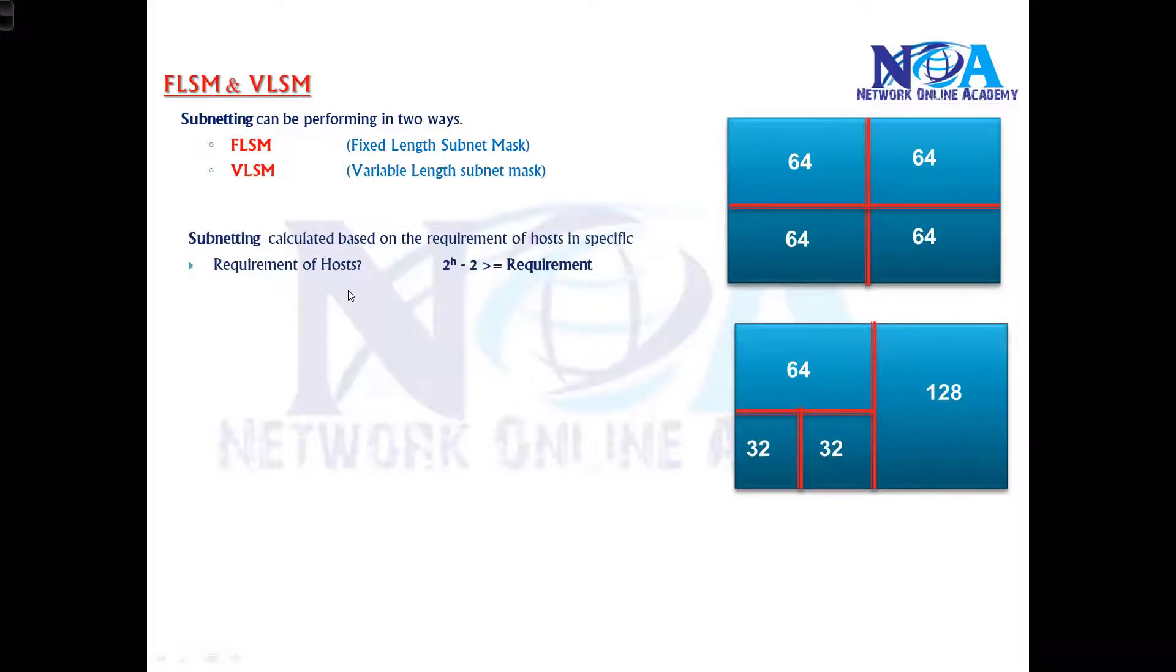Whatever method we use, it depends on the requirement - whether it is same requirement or variable requirement. If it is same, then it is FLSM. If it is variable, then it is VLSM. Subnetting is completely done based on the requirement. The requirement is nothing but the number of devices you want to connect - the number of devices you want in that department. In simple words, we call this host requirements. Host means nothing but the number of devices.